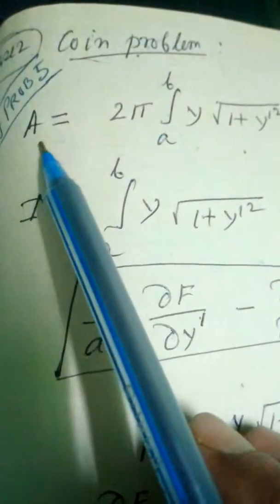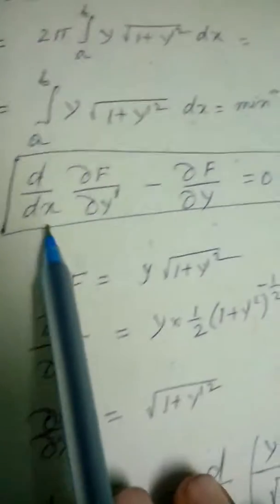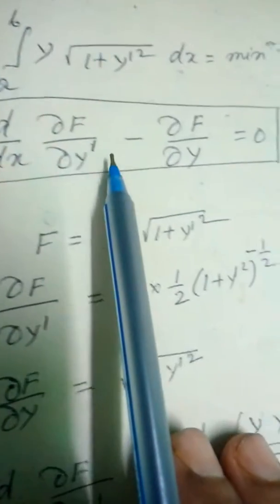Okay. Now, let us find out this. This is the problem. A equals, that we have done in the earlier, this is to be minimum. Now, I equals a to b y times √(1+y'²)dx to be minimum. Okay. Now, this is the equation already we know it. Okay. This is equation one. So f is equal to this one. From where? Here. This is the f. So f equals this one.